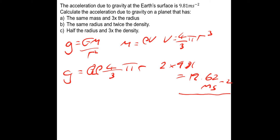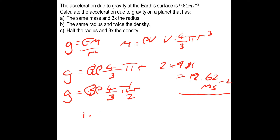Part C: half the radius and 3 times the density. Using g equals G·ρ·(4/3)·π·r: 3 times the density and half the radius — 3 times a half is 1.5, so we have 1.5g. That's 1.5 times 9.81, which gives a gravitational field strength of 14.7 metres per second squared.